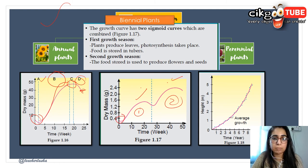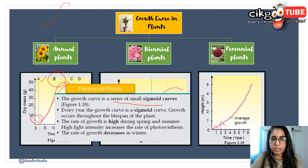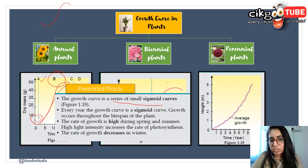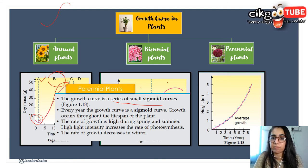For biennial plants, there is a slight drop at the start of germination, similar to annuals. Perennial plants have a series of small sigmoid curves throughout their lifespan — each year follows a sigmoid pattern. The rate of growth is high during spring and summer when high light intensity increases the rate of photosynthesis, causing growth to increase. The growth rate decreases during winter. So basically, all three types of plants have sigmoid growth curves — whether one season, two seasons, or many seasons.